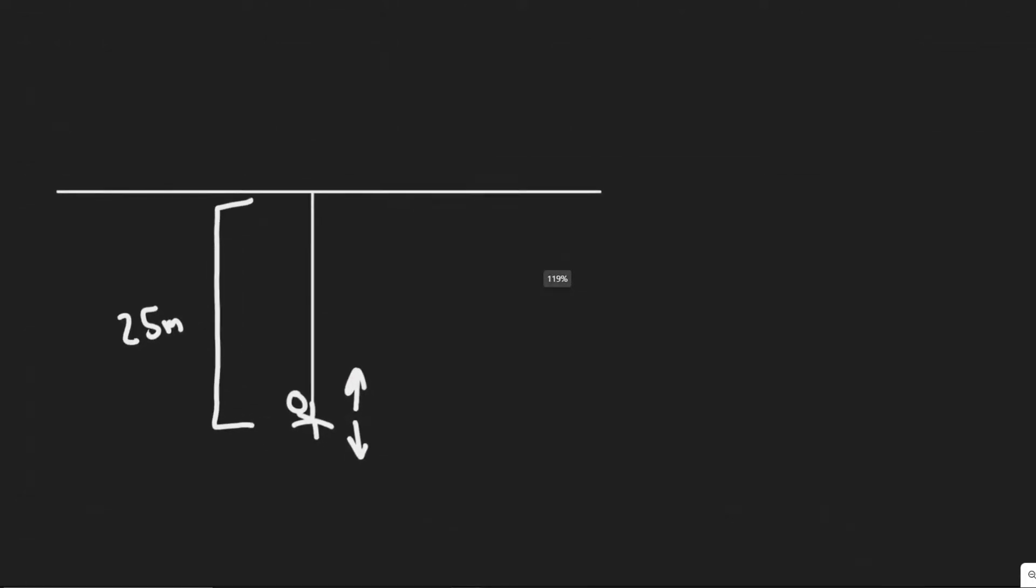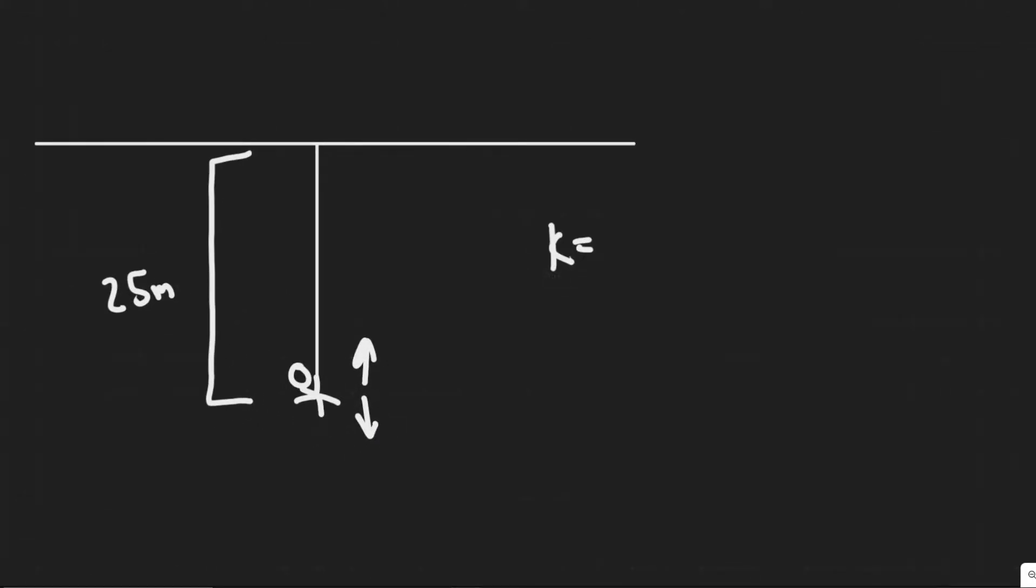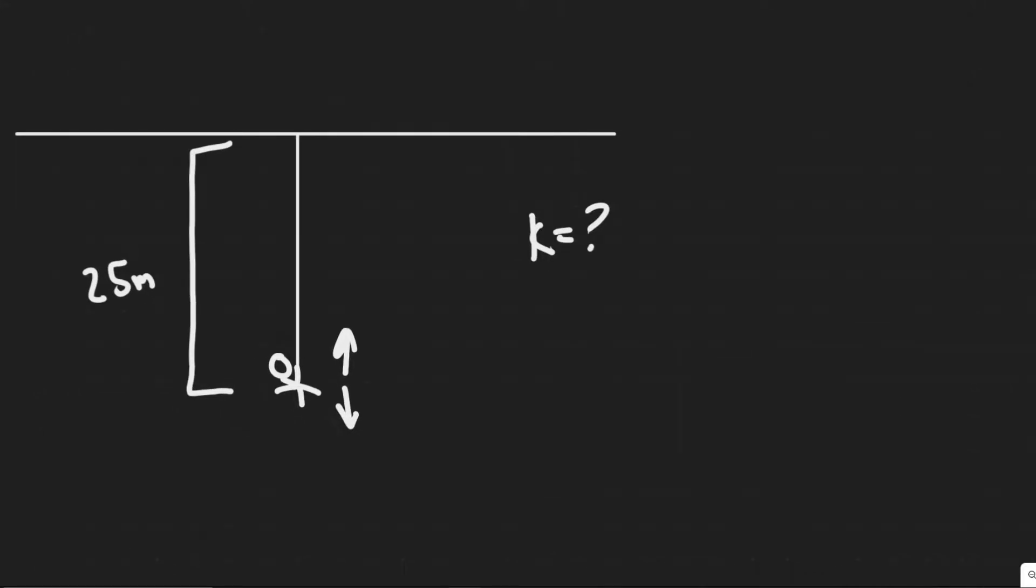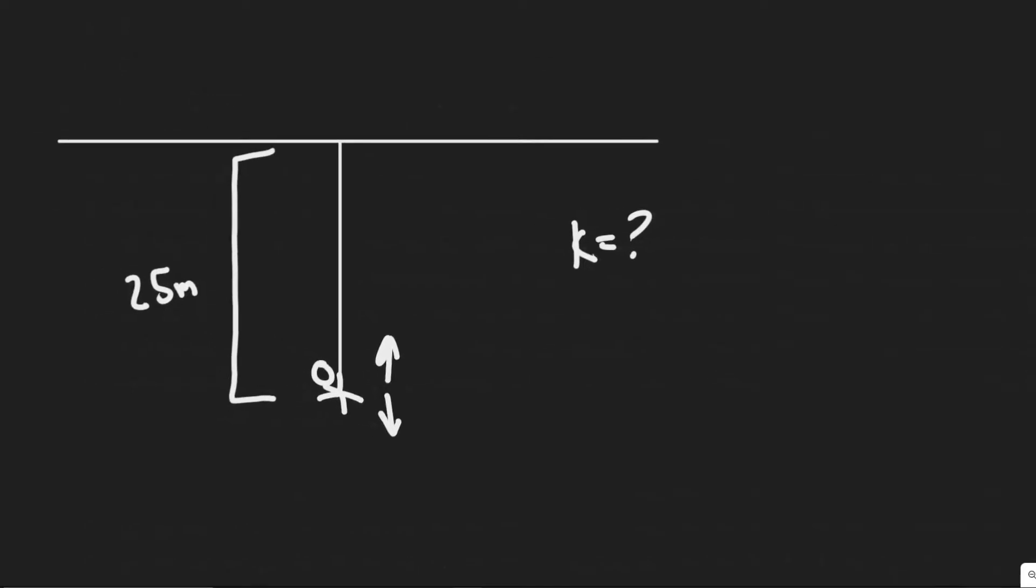What we're trying to find is two things. One is the spring stiffness constant k, so we'll say k equals question mark, and then the unstretched length of the bungee cord. It's going to be some shorter length than where he lands, because obviously it's going to be stretched out. So we want to find this length here. Those are the two things we're going to find.